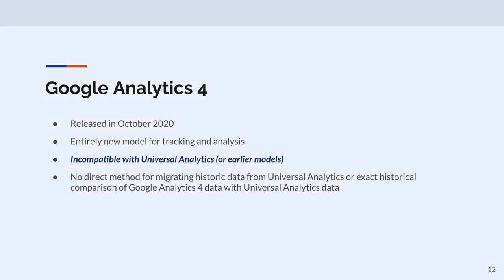GA4 — initial release in 2020. Entirely new model for tracking and analysis. It's different, incompatible with earlier models, and there's no import. That said, I don't think it's actually that huge of a deal honestly. The need for five, six, seven year old analytics data is, in the real world, pretty useless. You mostly want to know what was last quarter, what was last year. You can export data from Universal Analytics into CSV and mess around with Excel if you want. But a year from now, probably not a big deal.